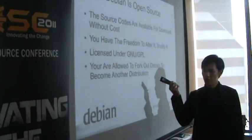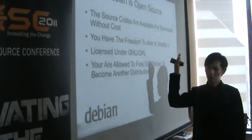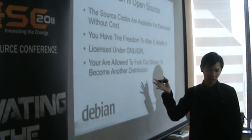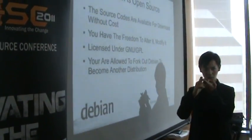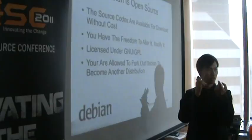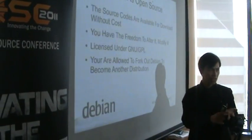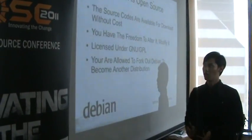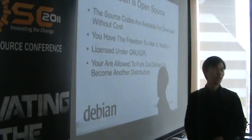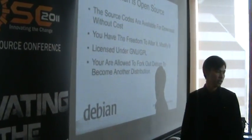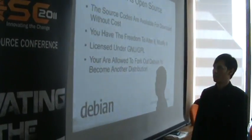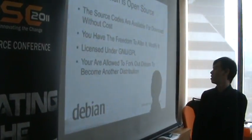All three of the distributions — DBane Linux, DBane Herb, and DBane K3BSD — are all licensed under GPL.